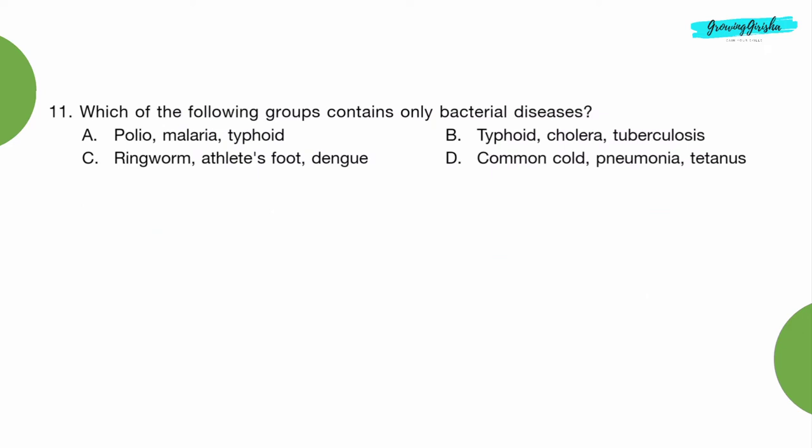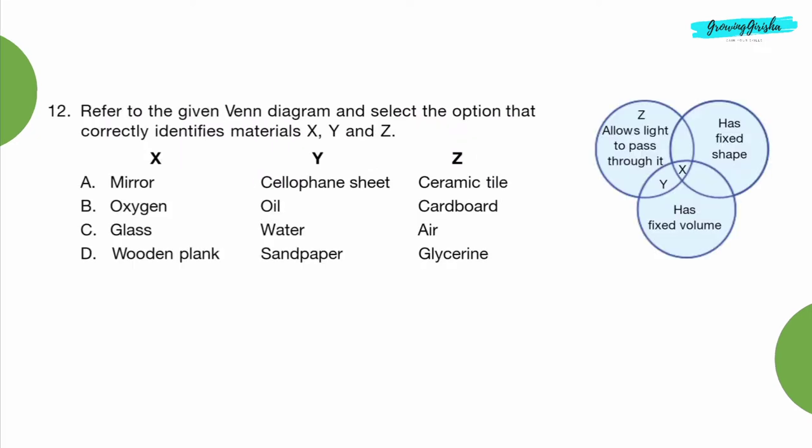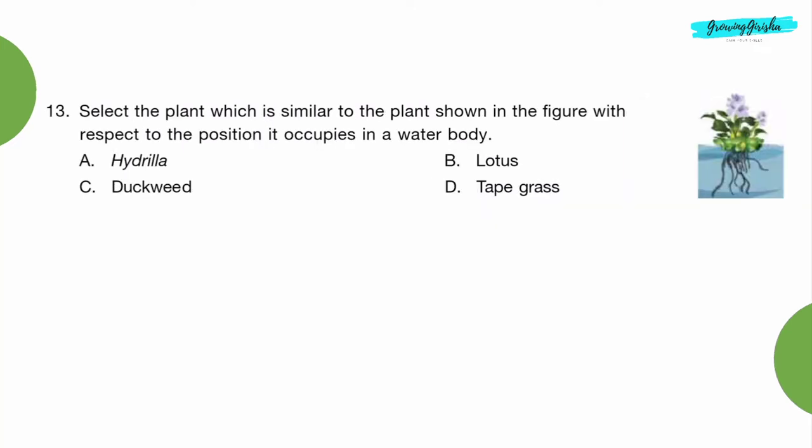Question 11: Which of the following groups contains only bacterial diseases? Option B: Typhoid, Cholera and Tuberculosis. Question 12: Refer to the given Venn diagram and select the option that correctly identifies materials X, Y and Z. Option C: X is glass, Y is water, Z is air.